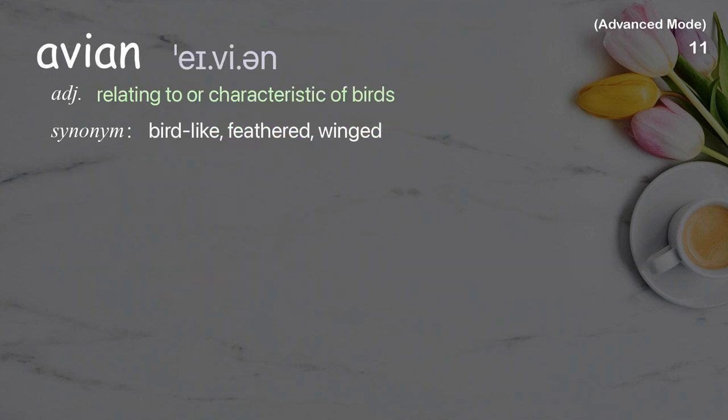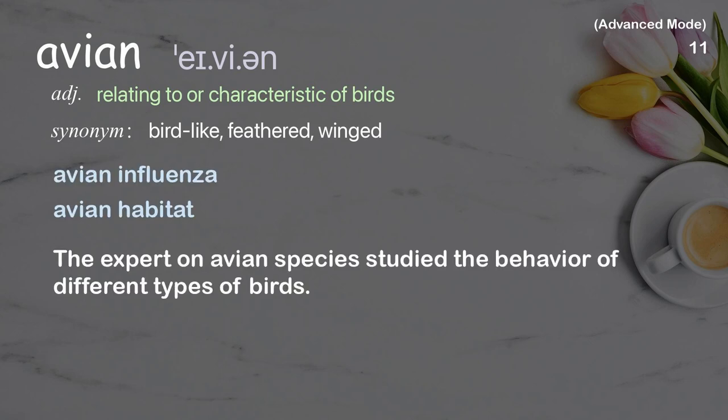Avian. Relating to or characteristic of birds. Examples: avian influenza, avian habitat. The expert on avian species studied the behavior of different types of birds.